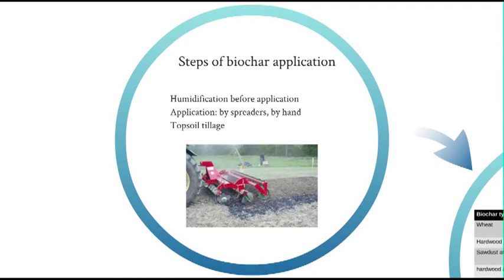The application of biochar has three steps. First, humidification of biochar is needed to reduce risks associated with dust. Then, biochar is applied by hand or by sprayers. And finally, uniform topsoil tillage is one example of combining the biochar with the soil.